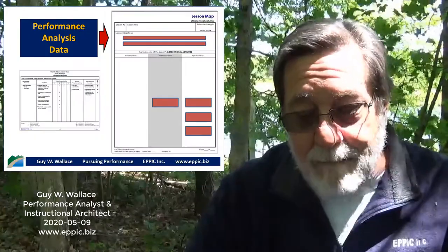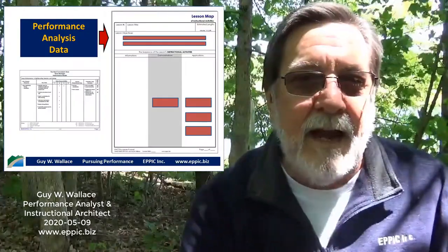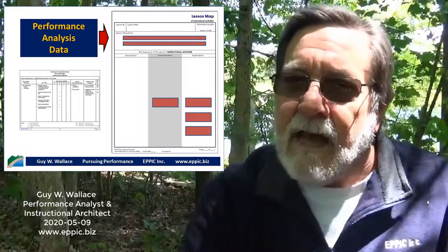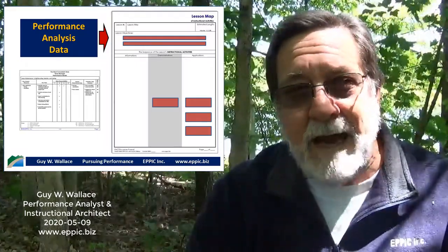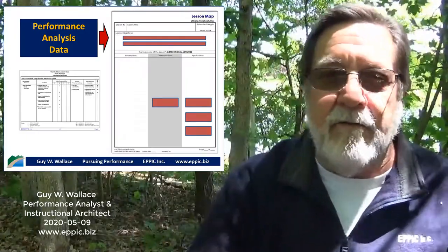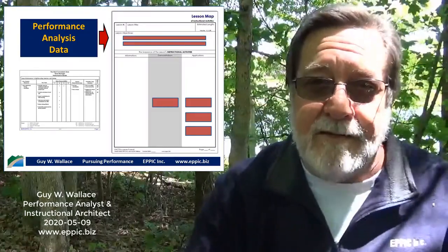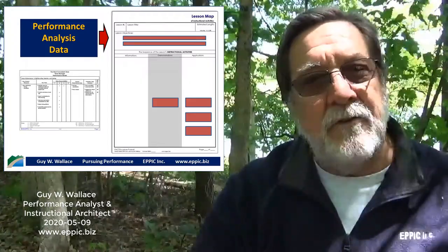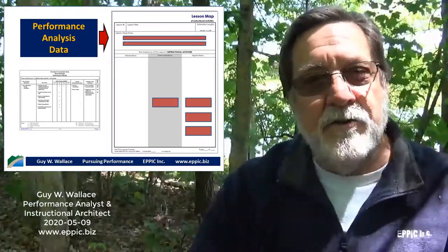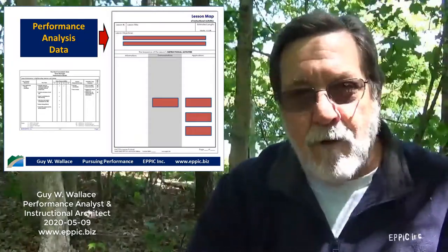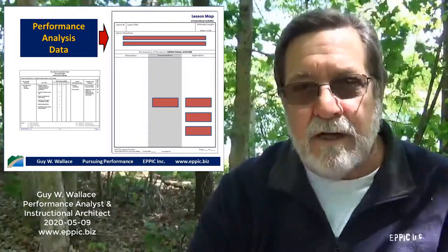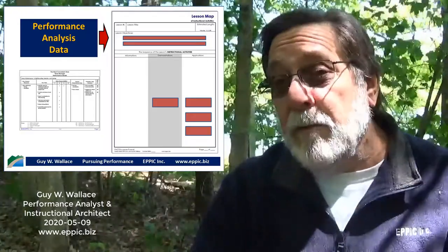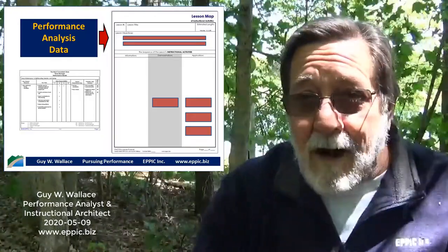Let's look at how the performance model feeds the lesson map. When I have the performance data, I work with the design team and confront them with the data, asking them to make decisions: given this analysis data, what are the learning objectives? We quickly write them out — not polishing the language — just getting a focus for this page of the lesson map. My approach to learning objectives has two levels: terminal learning objectives and enabling learning objectives. Terminal learning objectives could also be called performance objectives — what you're going to be able to do back on the job after training.